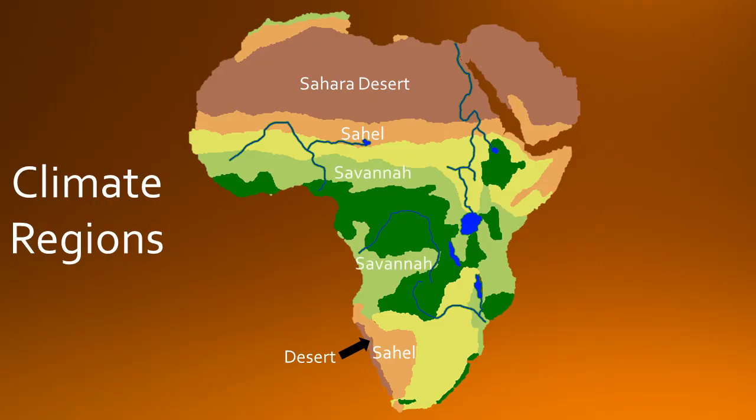This is the savannah. It is the largest biome in Africa and covers half of the continent. It also has a variety of wildlife. It is located south of the Sahel and most Africans live here.